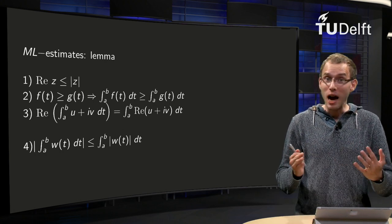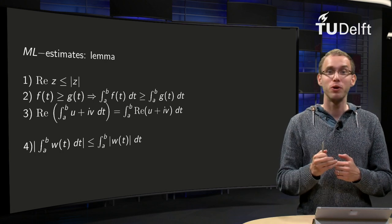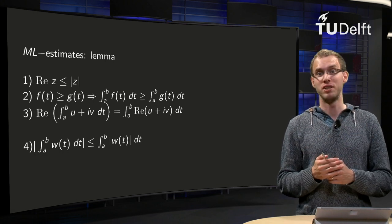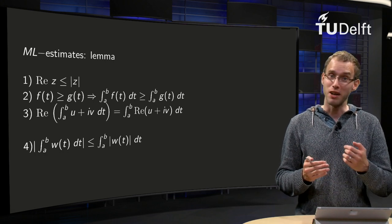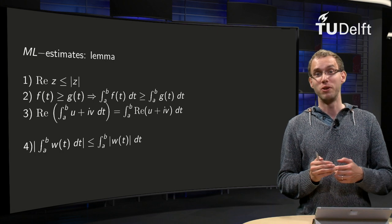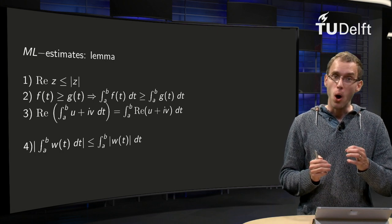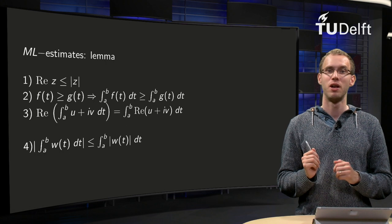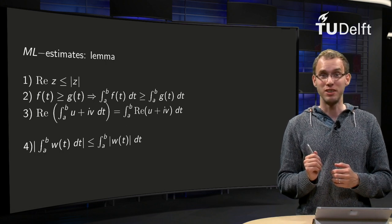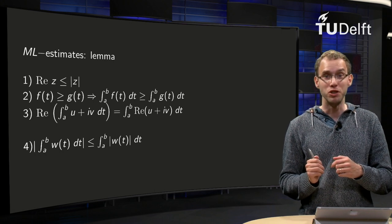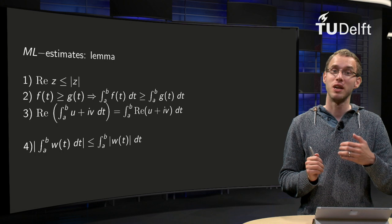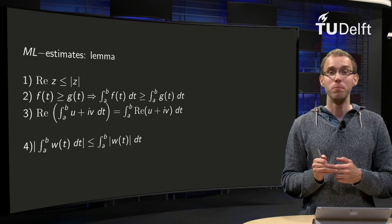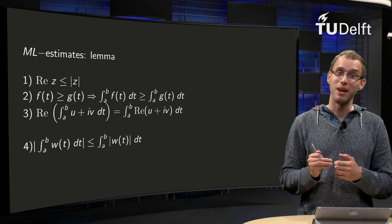What is an ML estimate and why do you need it? Later on we will use complex functions to compute real integrals for functions with unknown antiderivatives. Those complex integrals will consist of several parts. One or two parts will give us the desired real integrals; other parts will be complex integrals along either very small or very big circles. We cannot compute the latter integrals explicitly, however we can show that their contributions vanish if the radii of the circles either go to zero or to infinity. In order to show this we will need so-called ML estimates.